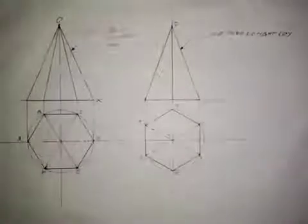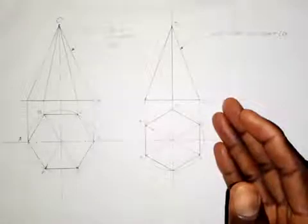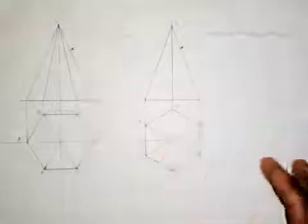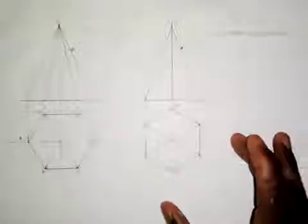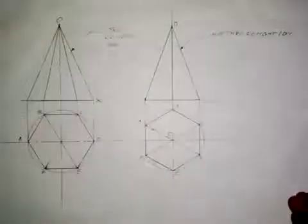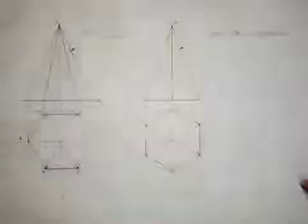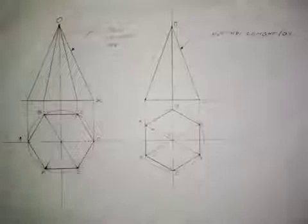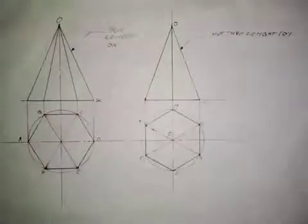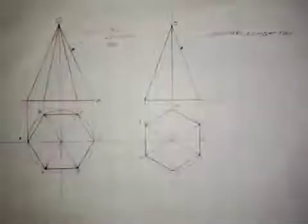To produce the surface development of this pyramid, which is positioned in this form, based on how the plan is looking, we need to find the true length. You cannot use length OY — length OY is not the true length. So we need to find a way of getting the true length of this pyramid.